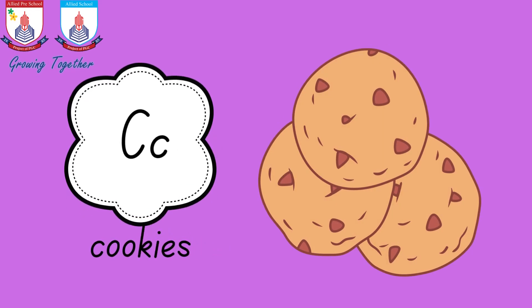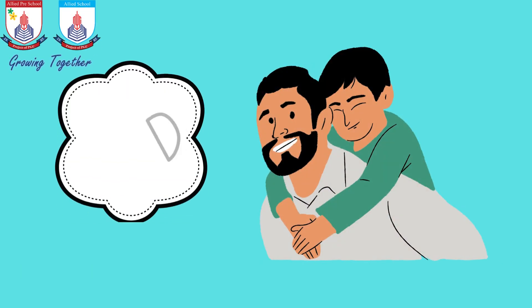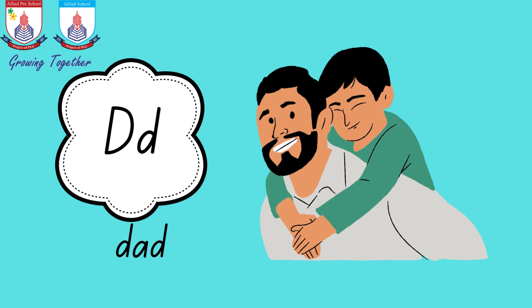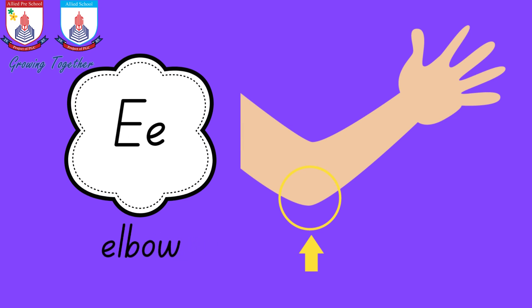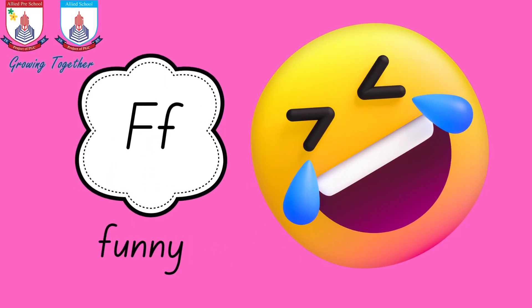C is for c-c-cookie, c-c-cookie. D is for d-d-daddy, d-d-daddy. E is for e-e-elbow, e-e-elbow. F is for f-f-funny, f-f-funny.